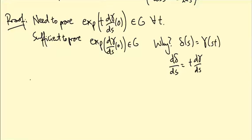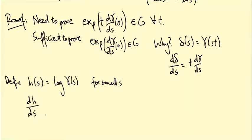So what I'm going to do is I'm going to take the logarithm, I'm going to call it H(s) of the γ(s). And maybe that doesn't make sense for all s, but it does make sense for small s. So define H(s) to be log of γ(s) for small s. This makes sense for small s because when s is small, γ(s) is close to the identity and log is defined in a neighborhood of the identity. Let's compute the derivative dH/ds at zero.